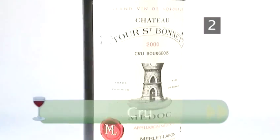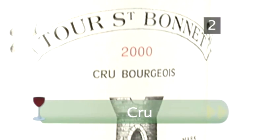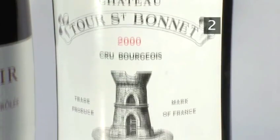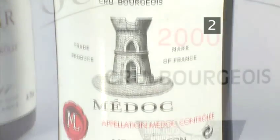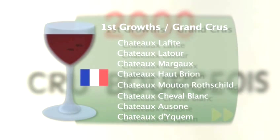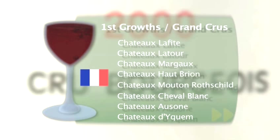Step 2. Cru. The most famous category is the cru in France. Cru is the French word for growth and refers to vineyards of especially high quality in a particular region. In Bordeaux there are a handful of first growths: Château Lafite, Latour, Margaux, Haut-Brion, Mouton Rothschild, Cheval Blanc, Ausone, and d'Yquem.